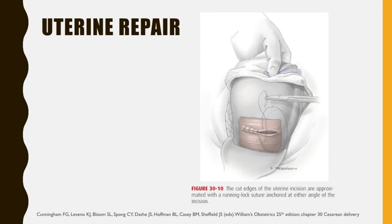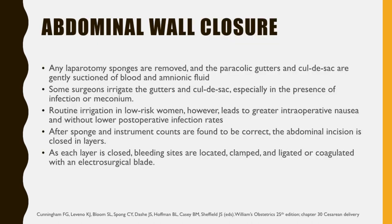For uterine repair, after placental delivery the uterus is lifted through the incision onto the draped abdominal wall and the fundus is covered with a moistened laparotomy sponge. Laparotomy sponges are removed and the paracolic gutters and cul-de-sac are suctioned of blood and amniotic fluid. Some surgeons irrigate the gutters and cul-de-sac, especially in the presence of infection or meconium, though routine irrigation in low-risk women leads to greater intraoperative nausea. After sponge and instrument counts are confirmed correct, the abdominal incision is closed in layers, with bleeding sites located, clamped, and ligated or coagulated.